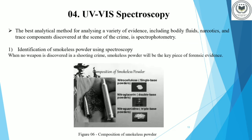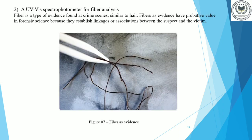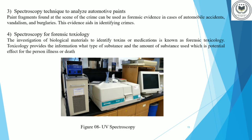Our next topic is spectrophotometry. The best analytical method for analyzing a variety of evidence, including bodily fluids, narcotics, and trace components discovered at the scene of a crime, is spectrophotometry. Through spectrophotometry, we can identify smokeless powder, analyze fiber, and analyze automotive paints. Spectrophotometry is also used in the investigation of biological materials to identify toxins or medications.